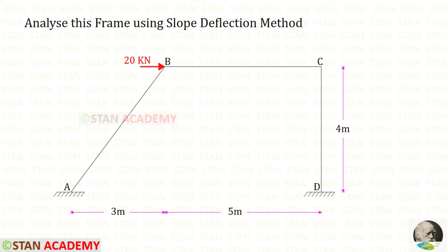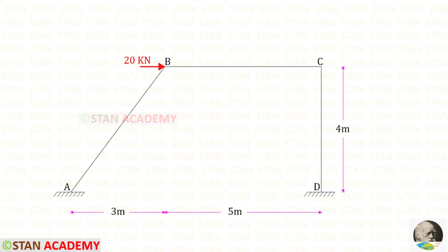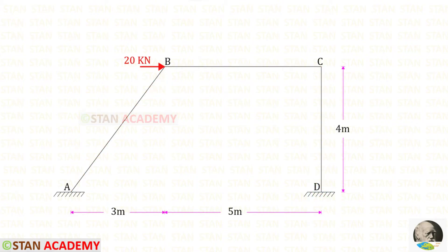Hello everyone. Today we are going to analyze this frame using the slope deflection method. In this frame there is an inclined member AB, horizontal member BC, and a vertical member CD. There is no member load. At point B we have a nodal point load of 20 kilo Newton. Since this load is acting towards the right side, this frame will sway towards the right side.